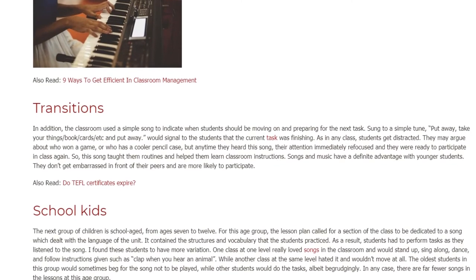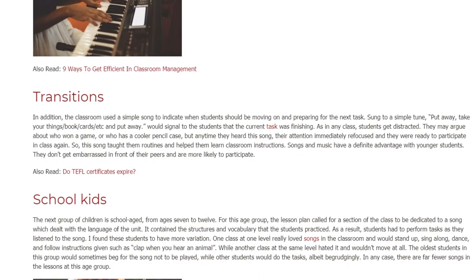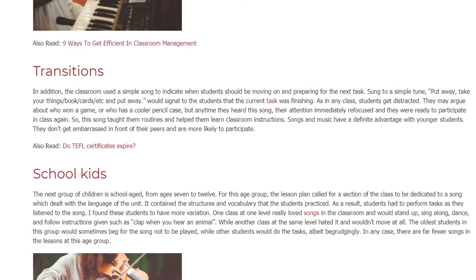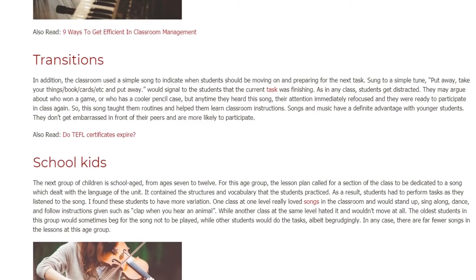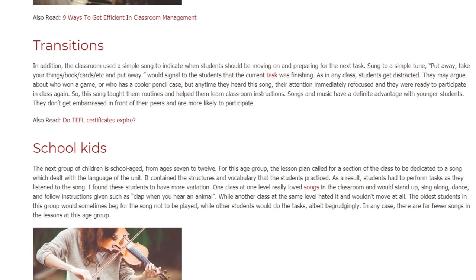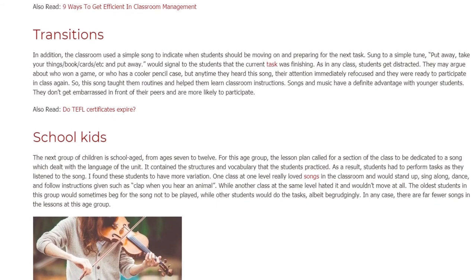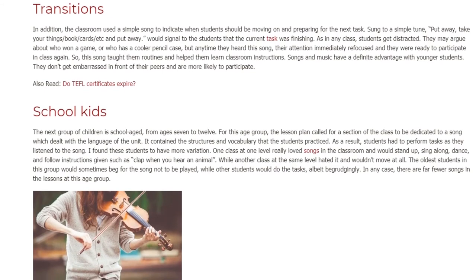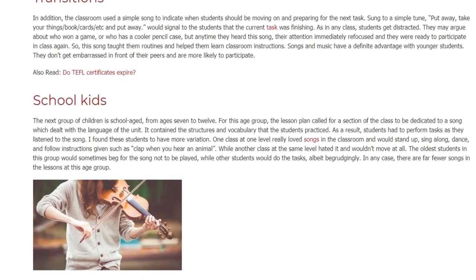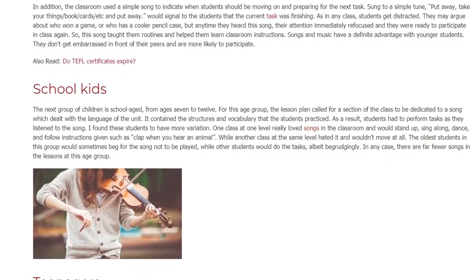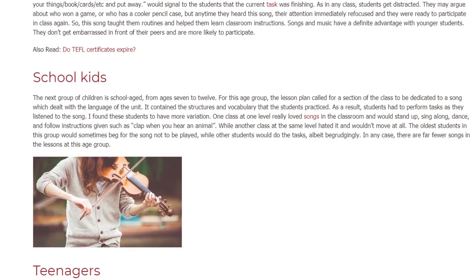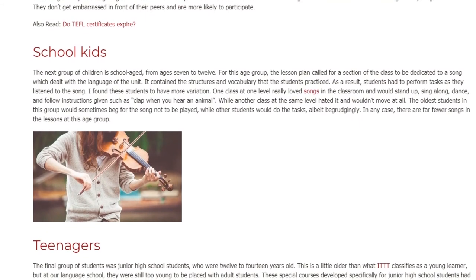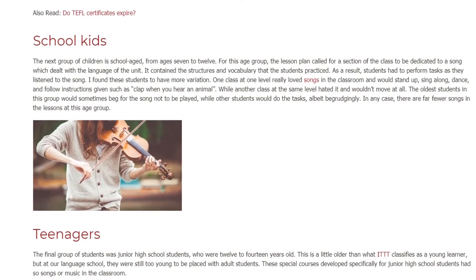The next group of children is school-aged, from ages 7 to 12. For this age group, the lesson plan called for a section of the class to be dedicated to a song which dealt with the language of the unit, containing the structures and vocabulary that the students practiced. As a result, students had to perform tasks as they listened to the song. I found these students to have more variation. One class at one level really loved songs in the classroom and would stand up, sing along, dance, and follow instructions such as 'clap when you hear an animal.' While another class at the same level hated it and wouldn't move at all. The oldest students in this group would sometimes beg for the song not to be played, while other students would do the tasks, albeit begrudgingly. In any case, there are far fewer songs in the lessons at this age group.